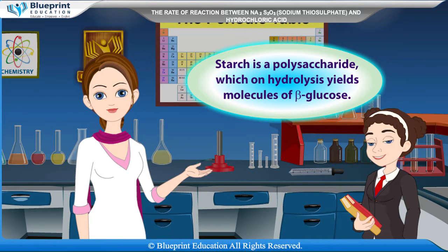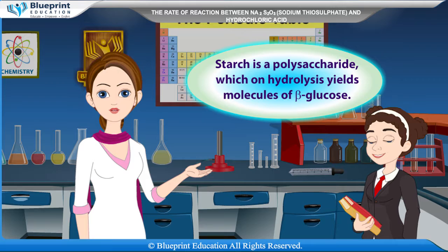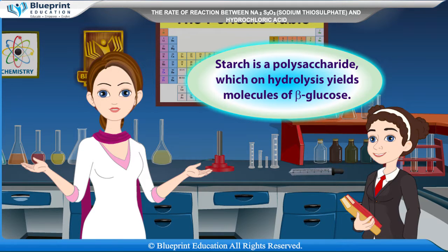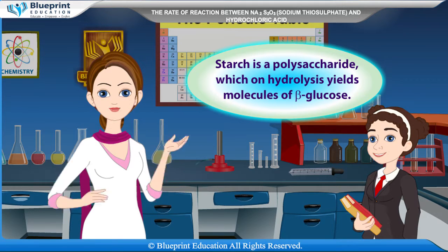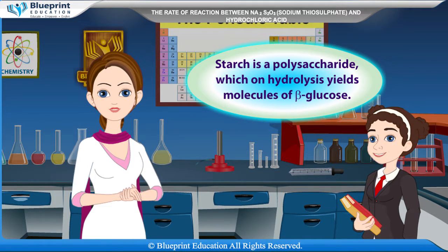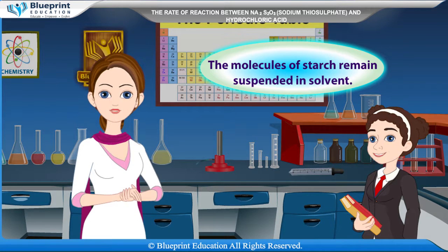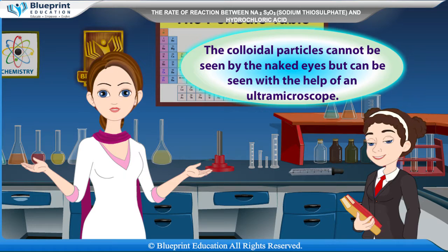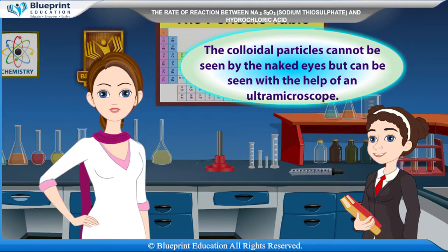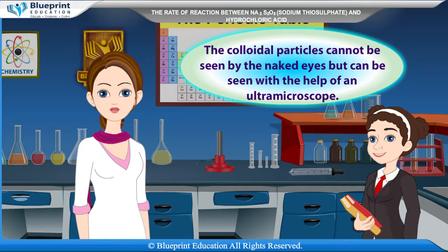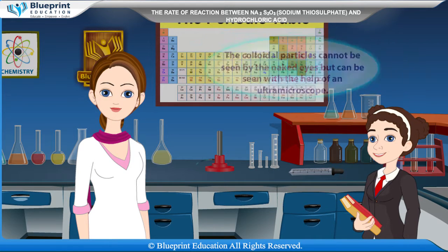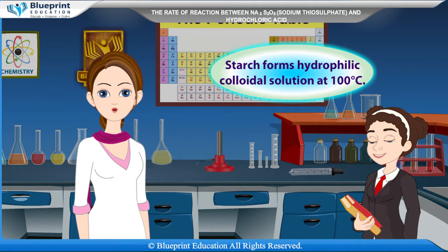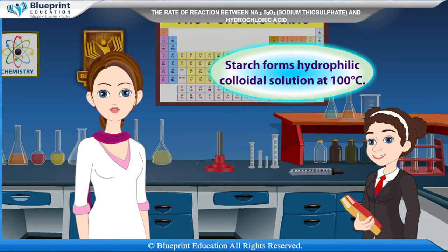Starch is a polysaccharide, which on hydrolysis yields molecules of beta-glucose. The molecules of starch remain suspended in solvent. The colloidal particles cannot be seen by the naked eye but can be seen with the help of an ultra-microscope. Starch forms a hydrophilic colloidal solution at 100 degrees Celsius.